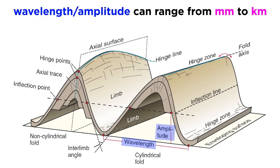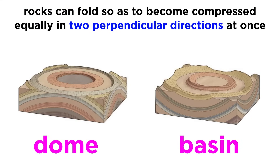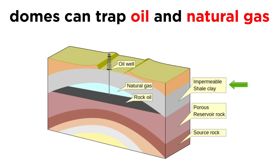Geologic folds can range in wavelength from millimeters to kilometers, as can the amplitude. If a rock is folded in a way that compresses it equally in two perpendicular directions, it can form domes and basins. Domes that are capped with an impermeable rock, like shale, make excellent traps for oil and gas.